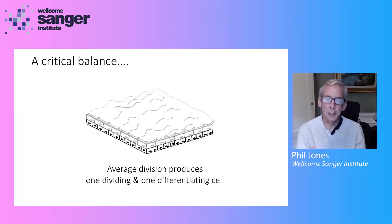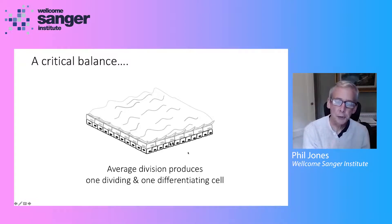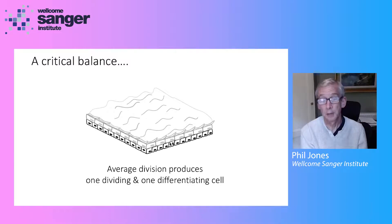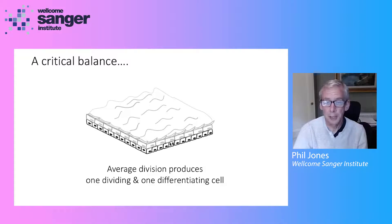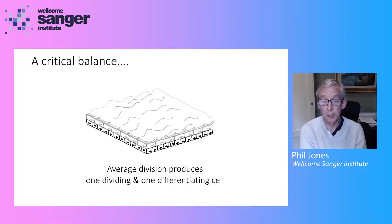Across the whole of life this is beautifully balanced, so exactly the right number of cells are made to replace those which are lost. There's a critical balance in the dividing cell layer at the bottom of the tissue. For the tissue to be sustained, on average a division must produce one cell that goes on to divide and one cell that will differentiate. If the balance goes wrong and you make too many dividing cells, you end up with a tumour. If you systematically produce too few, you'll end up with tissue failure and an ulcer.